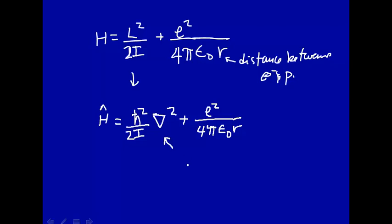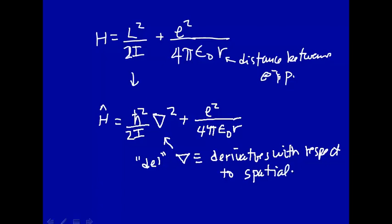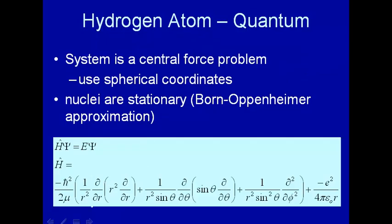Alright, so what is del-squared? Del, which is called del, D-E-L, that is defined as derivatives with respect to spatial coordinates. So depending on our coordinate system, we can replace del-squared by appropriate substitution. For example, in the Cartesian coordinate system, del-squared would be the second derivative with respect to x, plus the second derivative with respect to y, plus the second derivative with respect to z. In spherical coordinates, del-squared is this term in here.